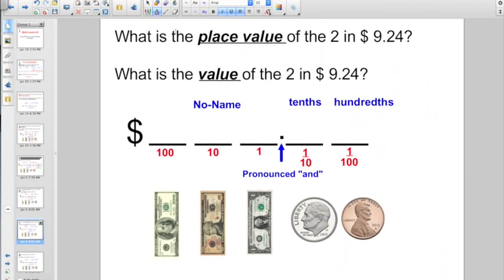Let's try this one. What is the place value of the 2 in $9.24? Well, let's lay it out. Here we have 9 in the ones place, 2 in the tenths place, and 4 in the hundredths place. The place value of the 2, that's going to be the tenths place.